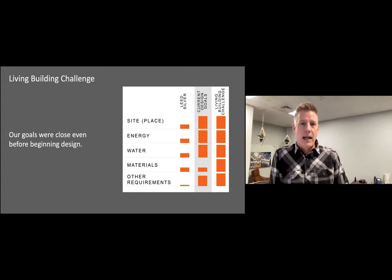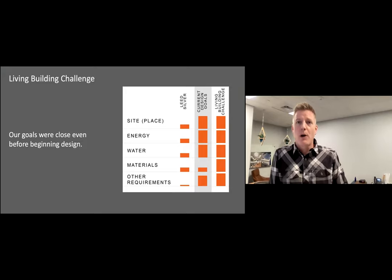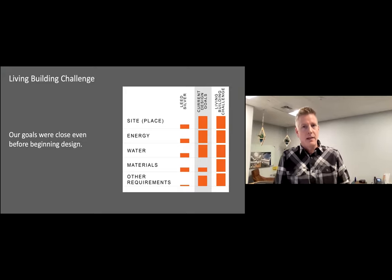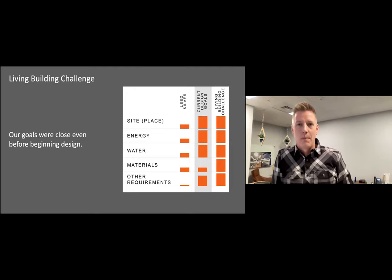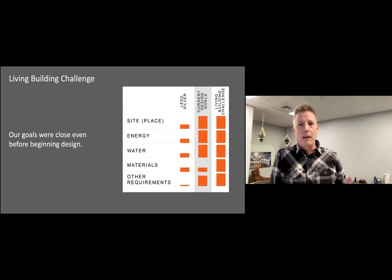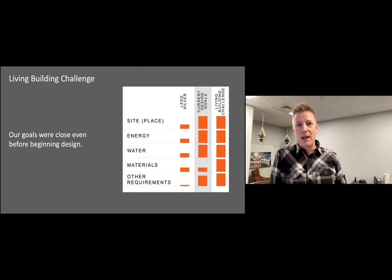They conducted sustainability workshops and found the owners were very supportive of the idea of moving from less bad to good, which the Living Building Challenge has made well known. They mapped the owners' design goals against the Living Building Challenge and found they were really well aligned. The only thing not explicitly discussed was material use and the red list. Closing that gap was much easier with that alignment, and so Living Building Challenge certification was on the table early, even though the RFP initially only called for LEED Silver.